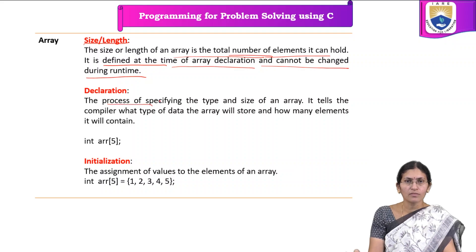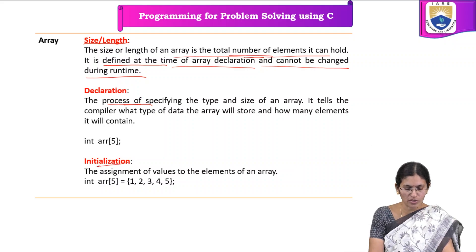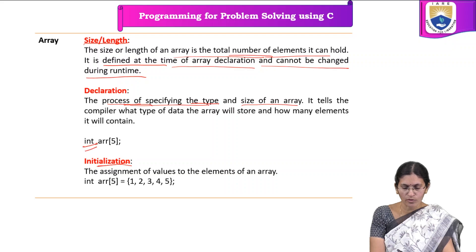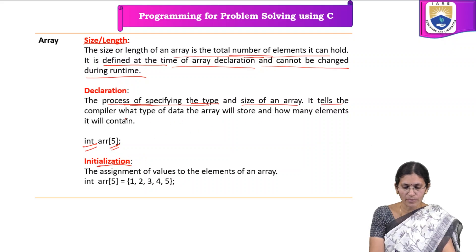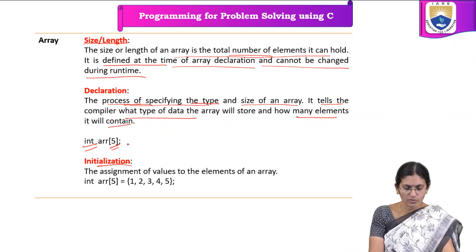There are two terms associated with arrays: declaration and initialization. The process of declaration is nothing but specifying the type and size of the array — what type of elements the array will hold and what is the size of the array. Size determines how many elements it can hold. Declaration tells the compiler what type of data the array will store and how many elements it will contain.